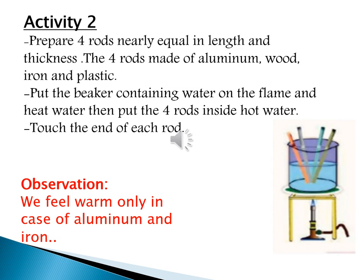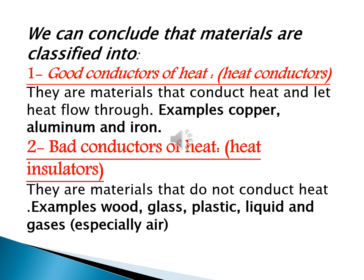Let's see Activity 2. Get four different materials — iron, aluminium, plastic, and wood — and put them in a glass container containing hot water. With your finger, touch the end of each one. You will feel warm only in the case of aluminium and iron. From Activity 1 and Activity 2, we conclude that materials are classified, according to heat conduction, into good conductors of heat and bad conductors of heat, or heat insulators.